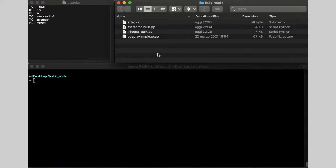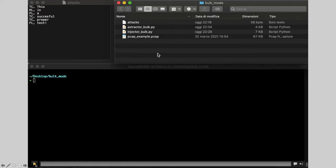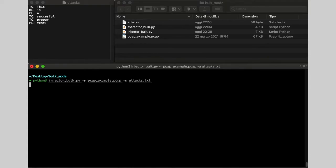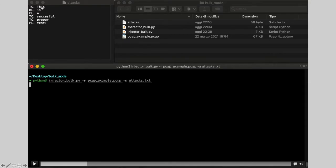Instead, for the bulk mode, we have, again, a simple interface through Python, which takes the script, the pcap file to read and to modify and the list of attacks. In this case, the list of attacks is done in this way. The first parameter specifies the field that I want to target. And the second parameter is what I want to inject.